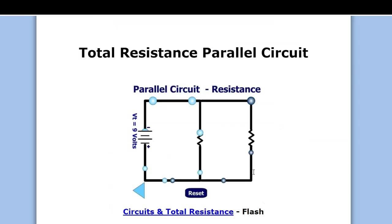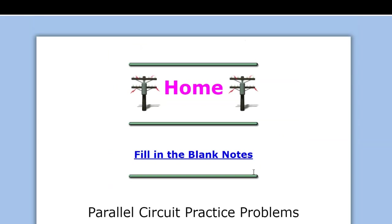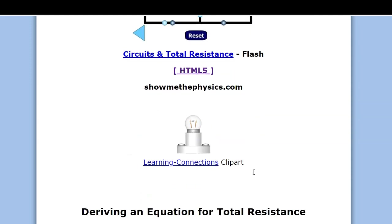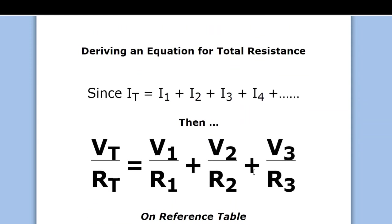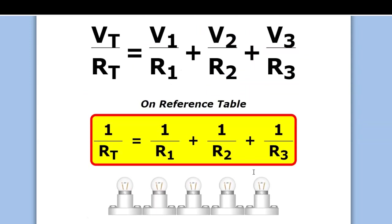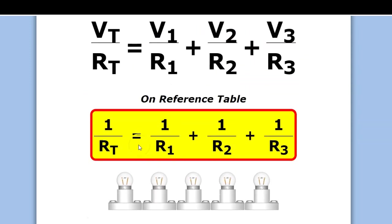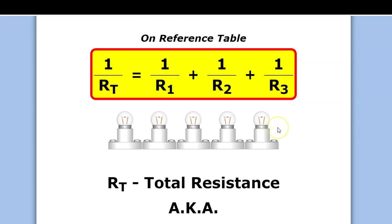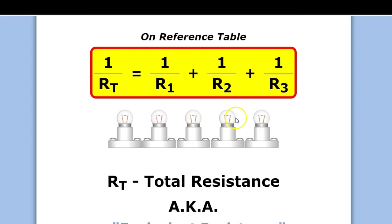Here's a parallel circuit. The equation to find the total resistance of a parallel circuit is 1 over RT equals 1 over R1 plus 1 over R2 plus 1 over R3. R1 represents the first resistor, R2 is the second, and R3 is the third.